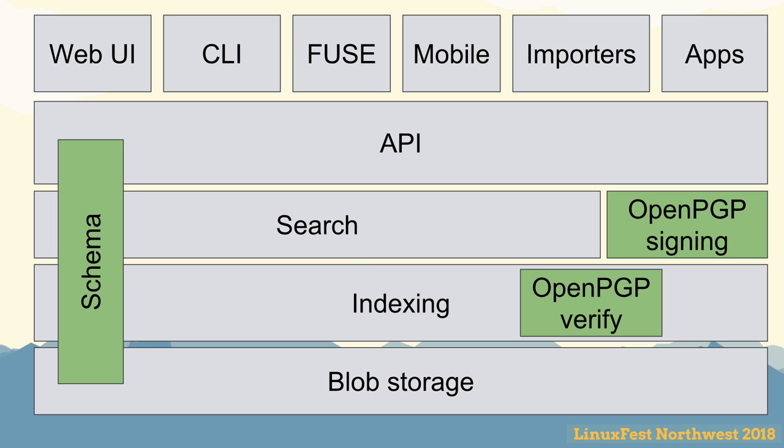Some schema blobs are super special, and we sign those — similar to how you sign Git tags. We use OpenPGP; every user has a key pair. We handle this behind the scenes, so if you're not a crypto nerd, by default when you start the server, if you don't have a key pair it'll create one for you.